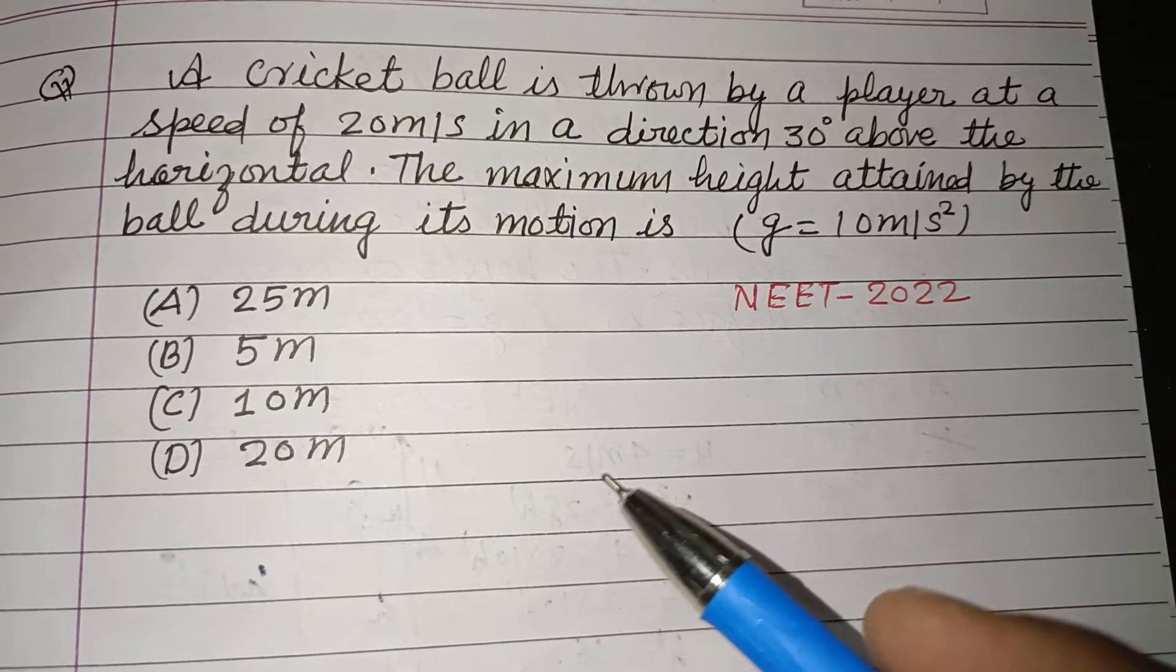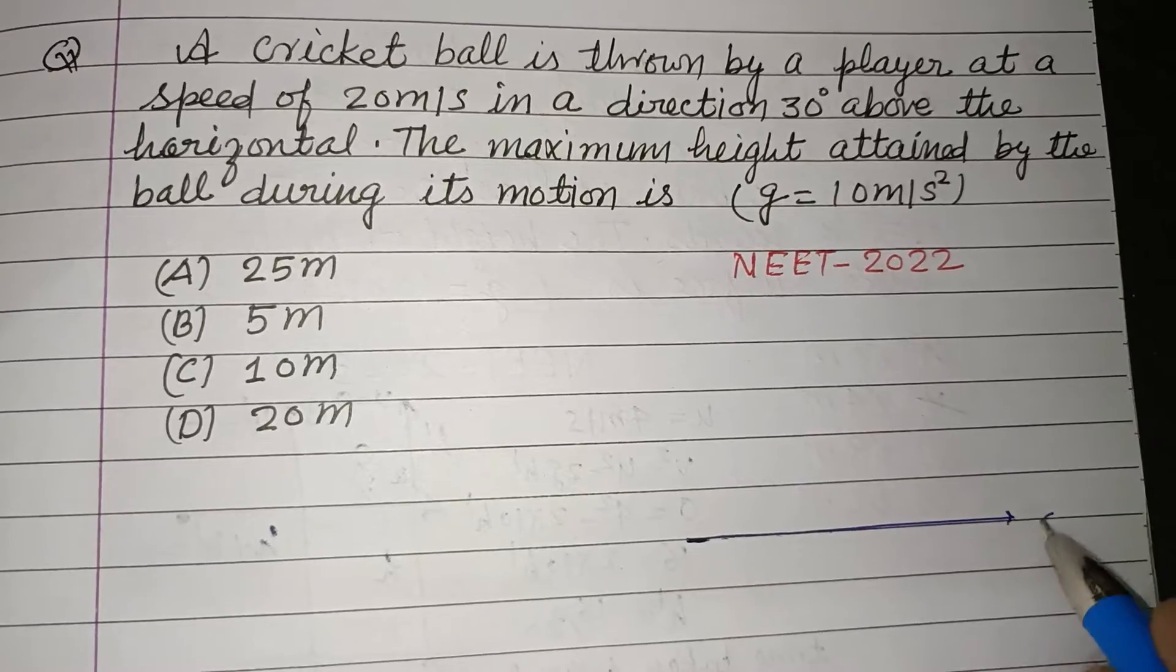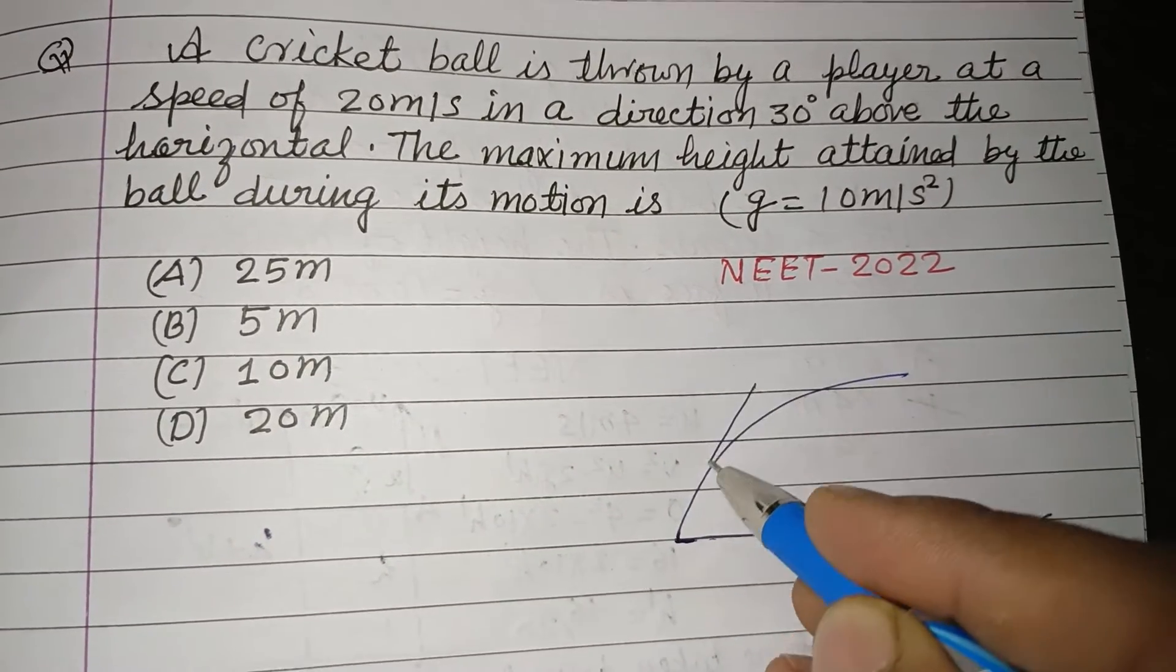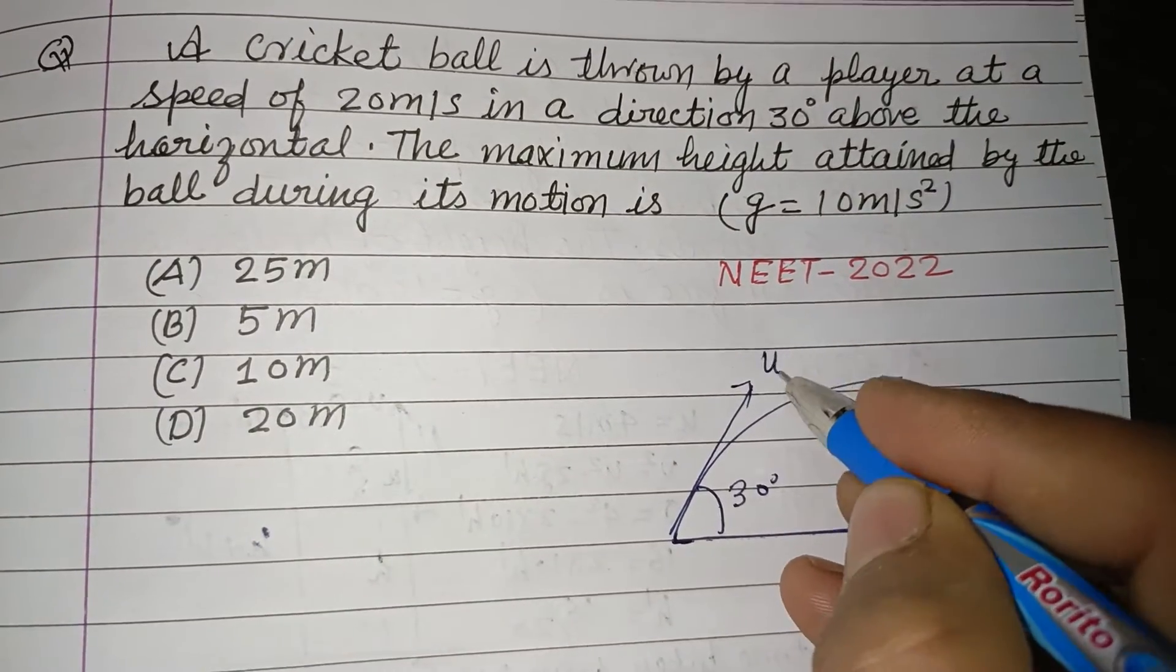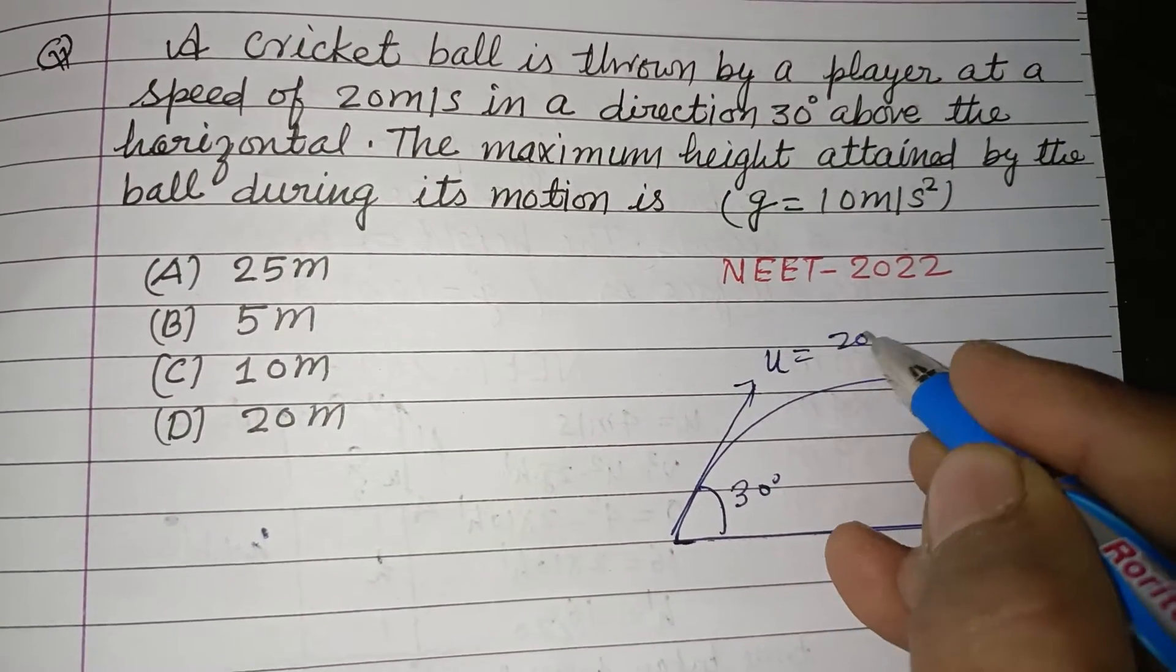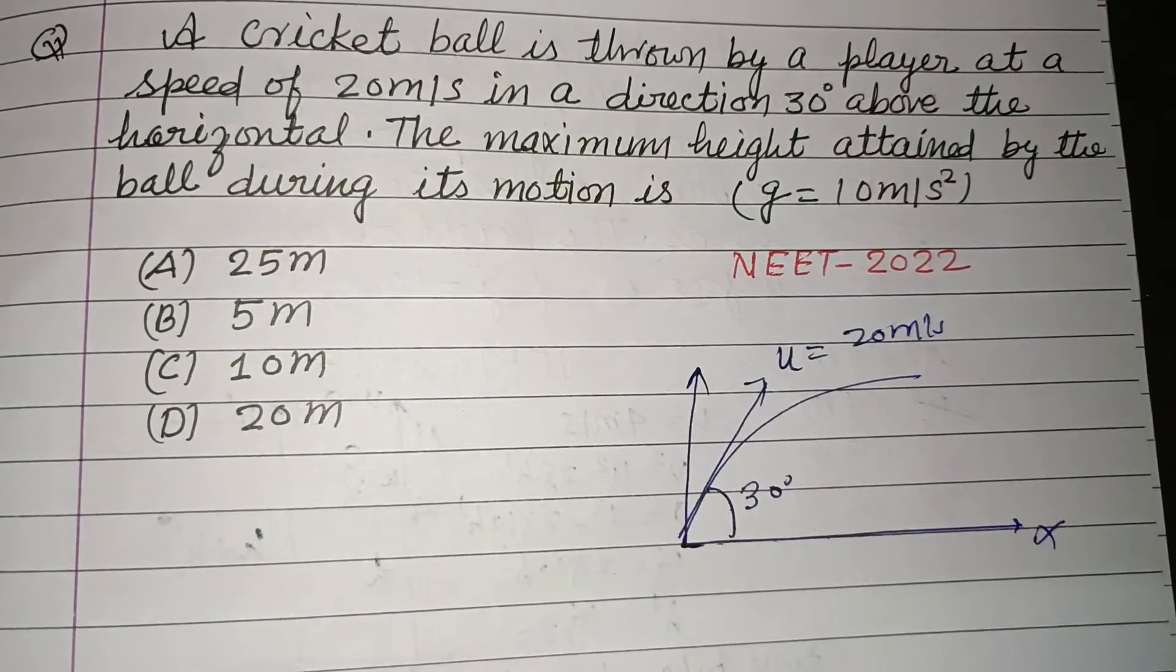The direction is 30 degrees with the horizontal. So this is horizontal and the ball is thrown at a direction of 30 degrees with initial speed 20 meter per second. The question is asking for the maximum height attained by the ball during the motion.